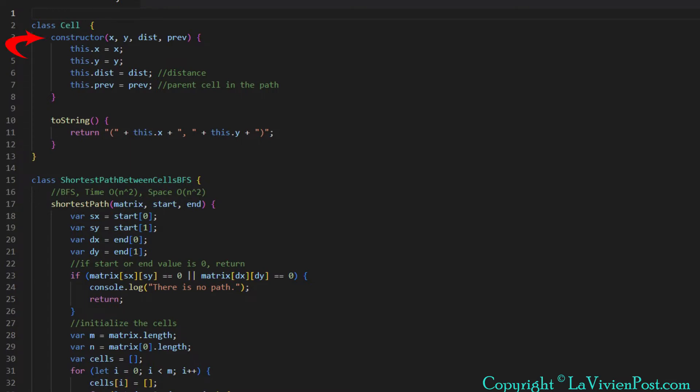Now, let's take a look at the code BFS. It will print the shortest path from the source to the destination. First, we define a cell class with the field x, y, dist, and prev.